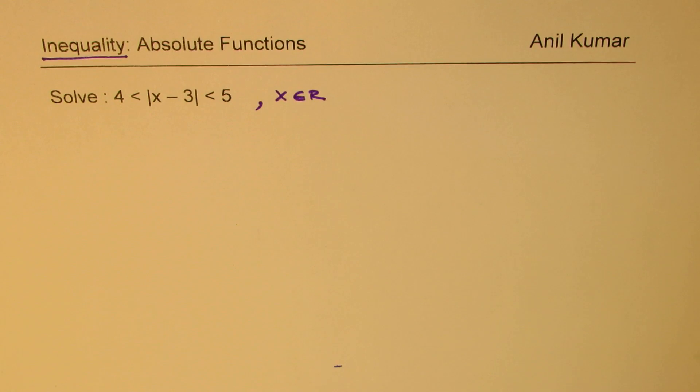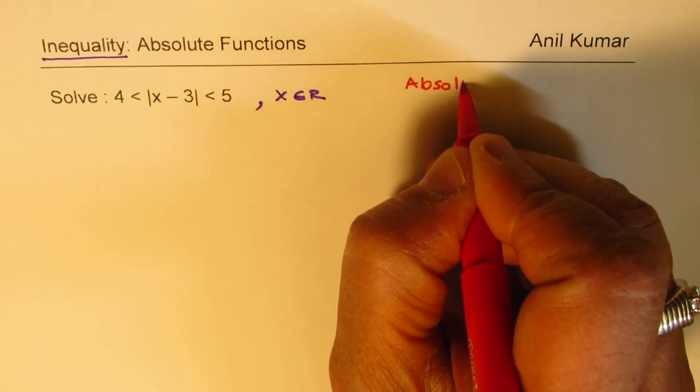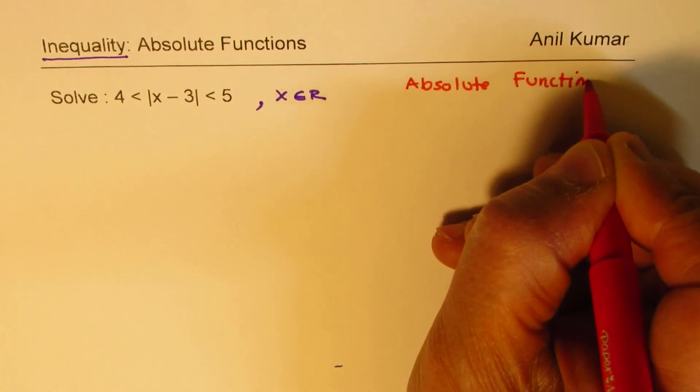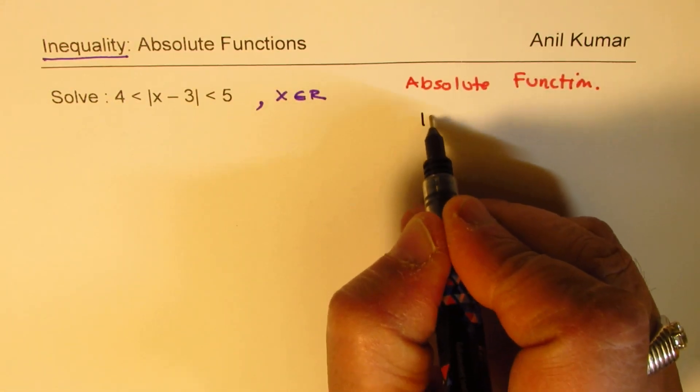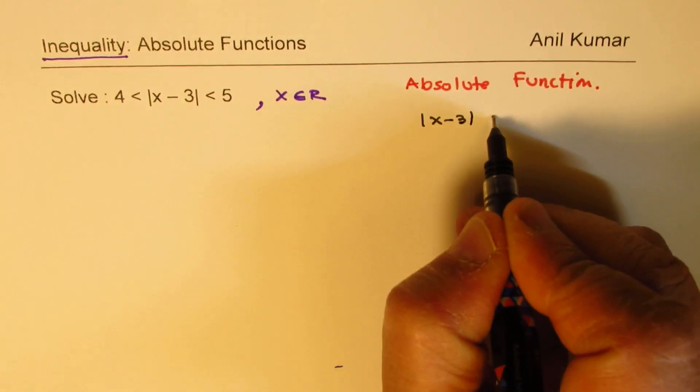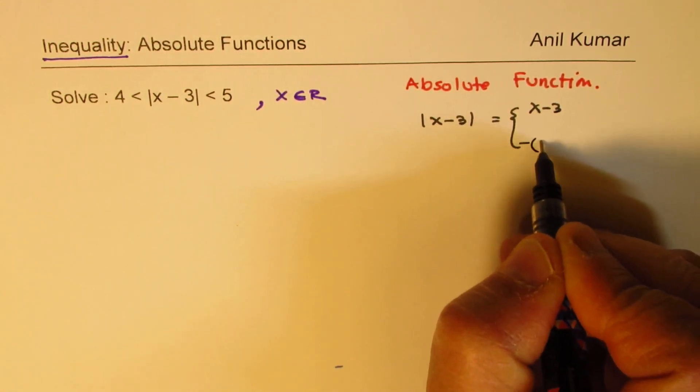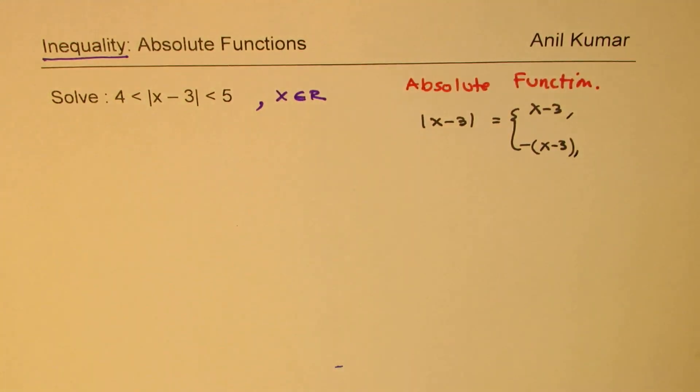To begin with, we'll try to understand what this absolute function is. Within the absolute we are given x minus 3. That could be equal to x minus 3, or minus of x minus 3, depending on which domain you're working in.